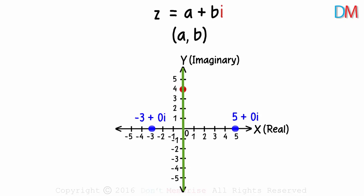And what if the point is here on the y-axis? Every point on the y-axis will have only the imaginary part. So this point will be 0 plus 4i.